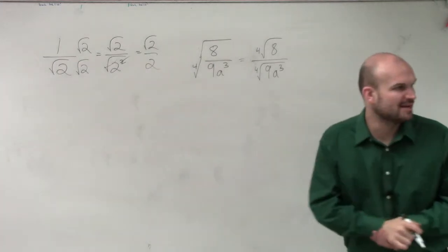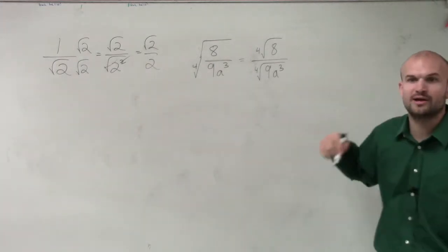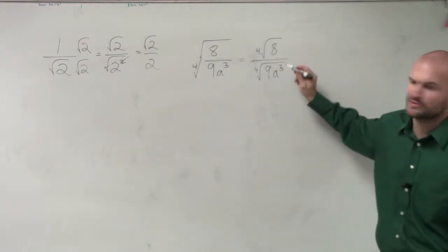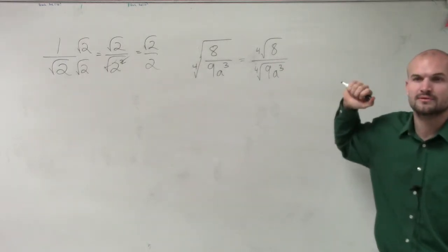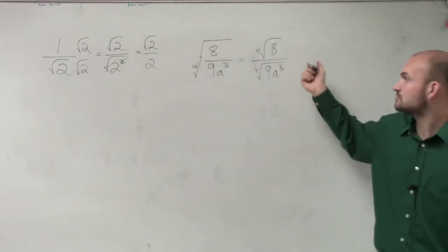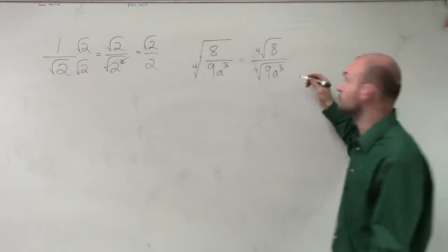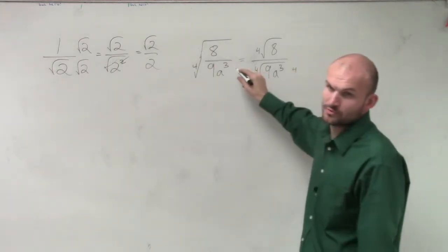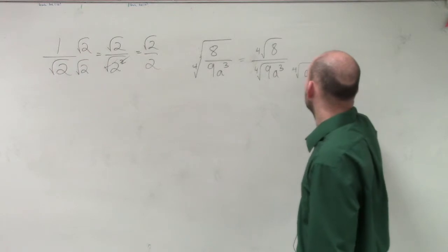So the problem over here you might say is, well, then what do you think you'd want to multiply by, Japonica, if I was just going to make a random guess? What do you think you'd want to multiply this by? Well, the fourth root, because we're doing fourth roots. So you want to do the fourth root of 9a cubed, right?